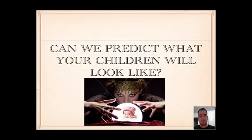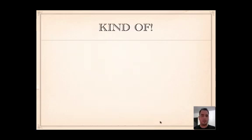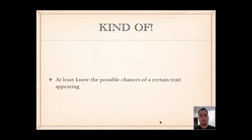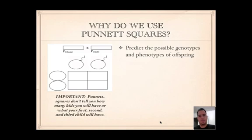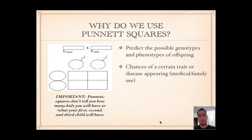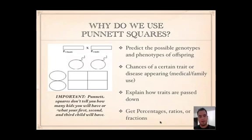Can we predict what your children will look like in the future? Kind of — at least we know the possible chances of a certain trait appearing. So why do we use Punnett squares? We use them to predict the possible genotypes and phenotypes of offspring, and the chances of a certain trait or disease appearing. It's used for medical and family use, to explain how traits are passed down, and we get percentages, ratios, or fractions.